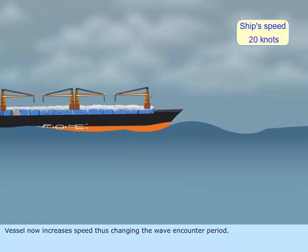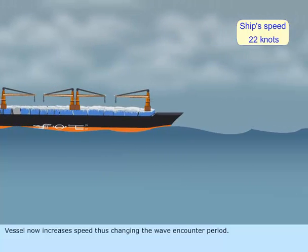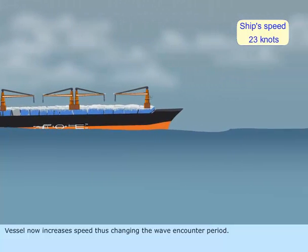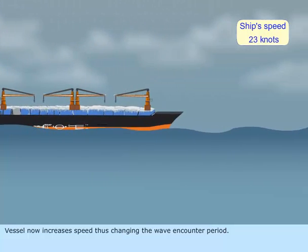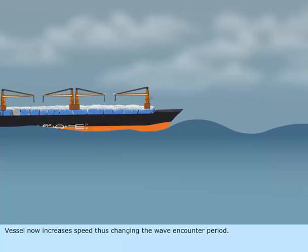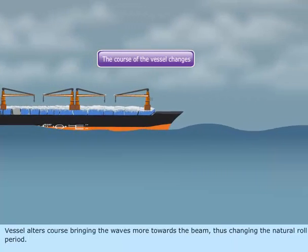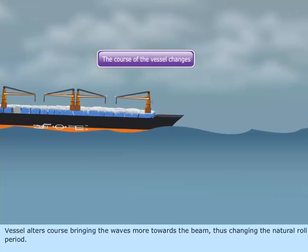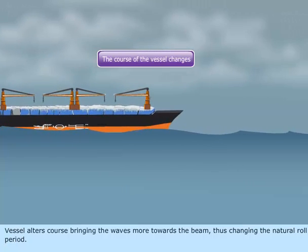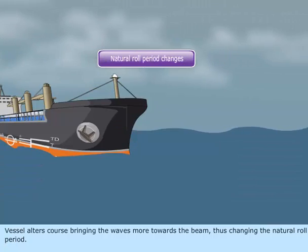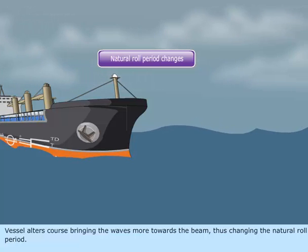The vessel now increases speed, thus changing the wave encounter period. The vessel then alters course, bringing the waves more towards the beam, thus changing the natural roll period.